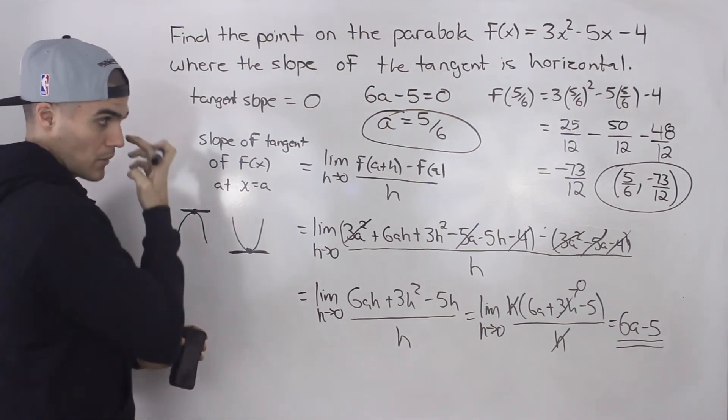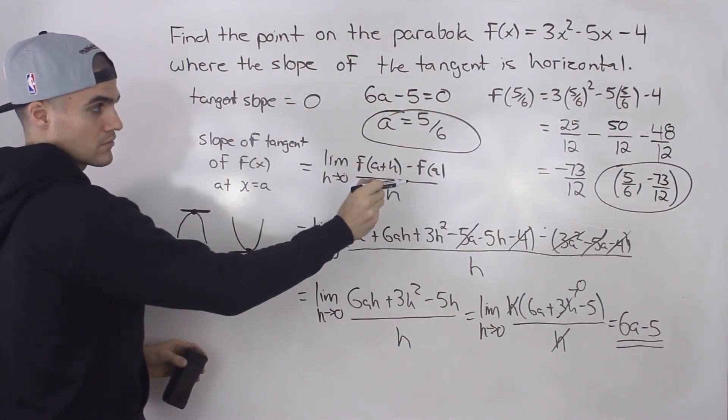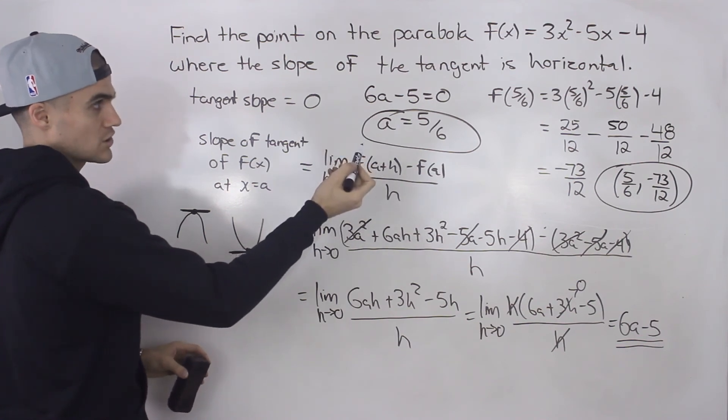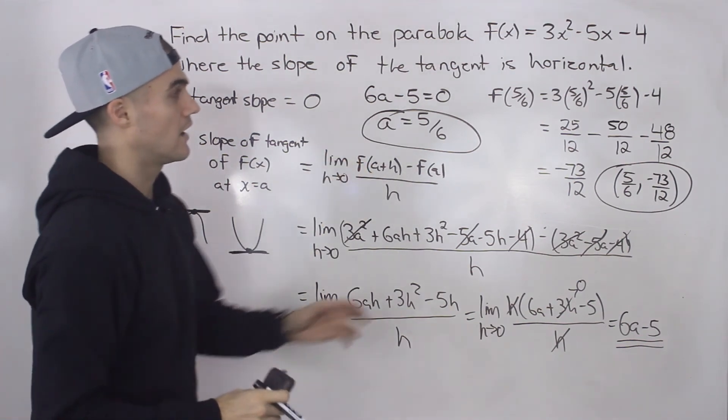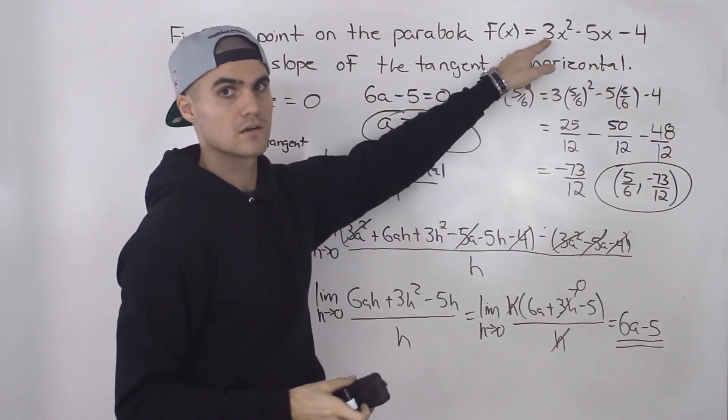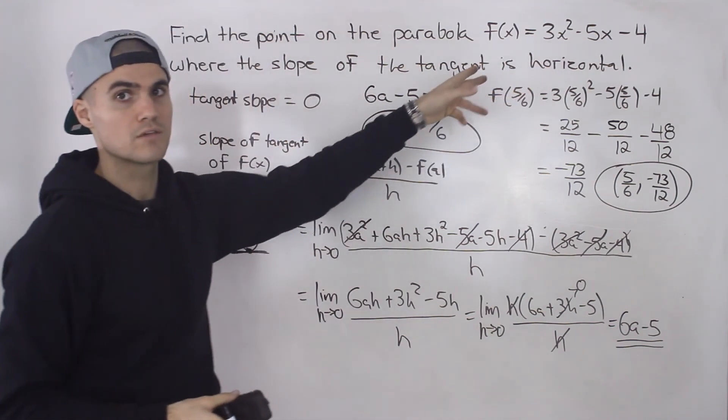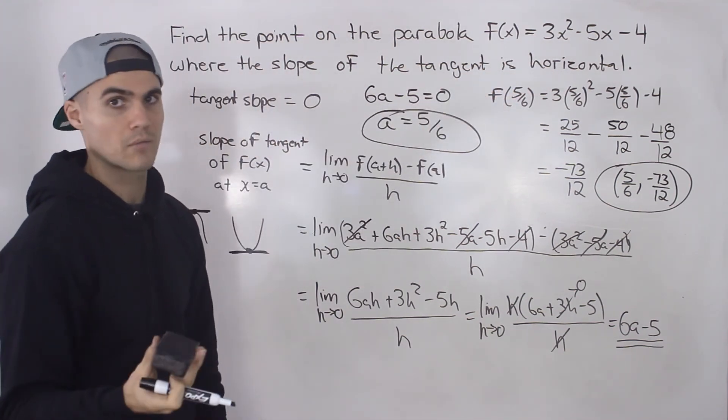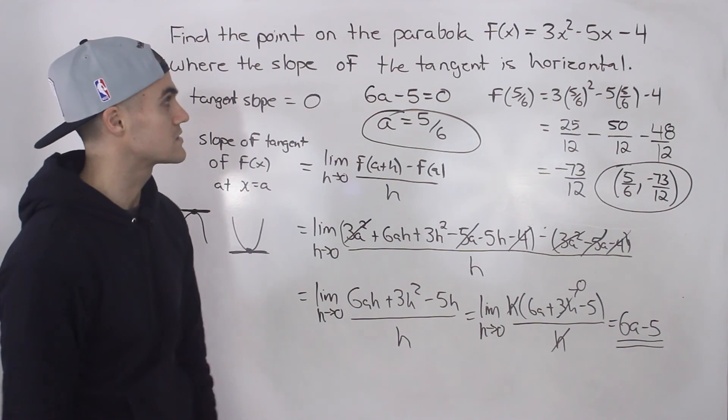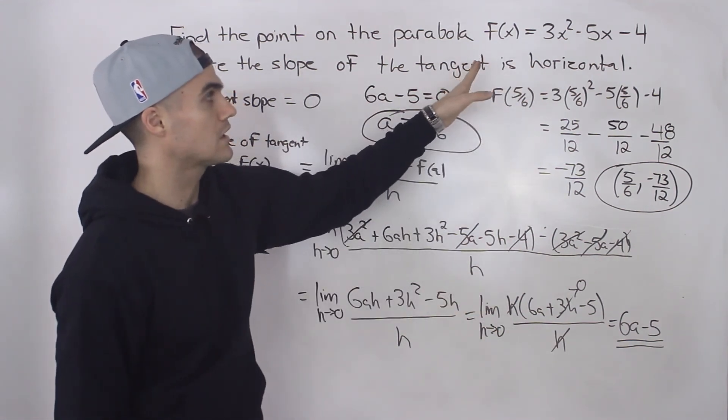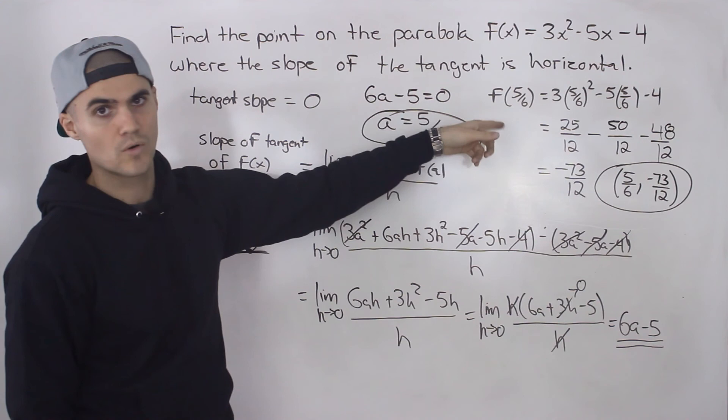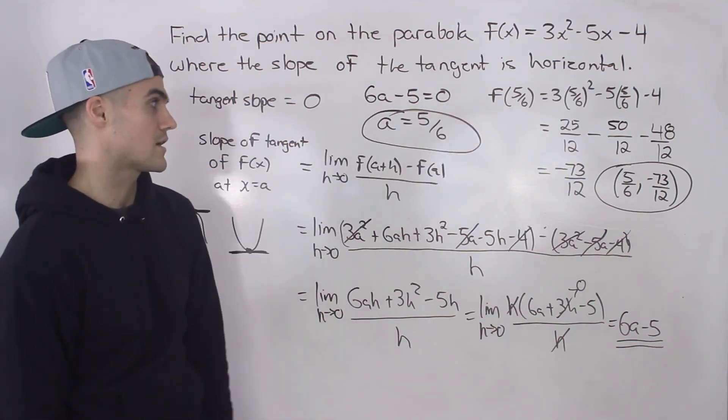So another way you could have found the point at which the tangent is horizontal is just by finding the vertex of this parabola. So you could have maybe even completed the square on this, if you remember how to do that from previous grades. So you'd factor out the 3 and then you would take that remaining b value divided by 2, square it, plus minus, etc.